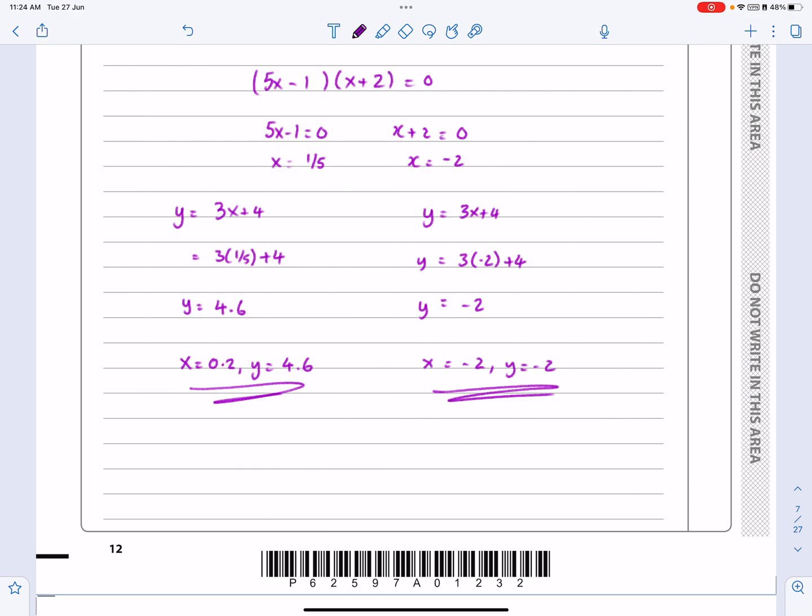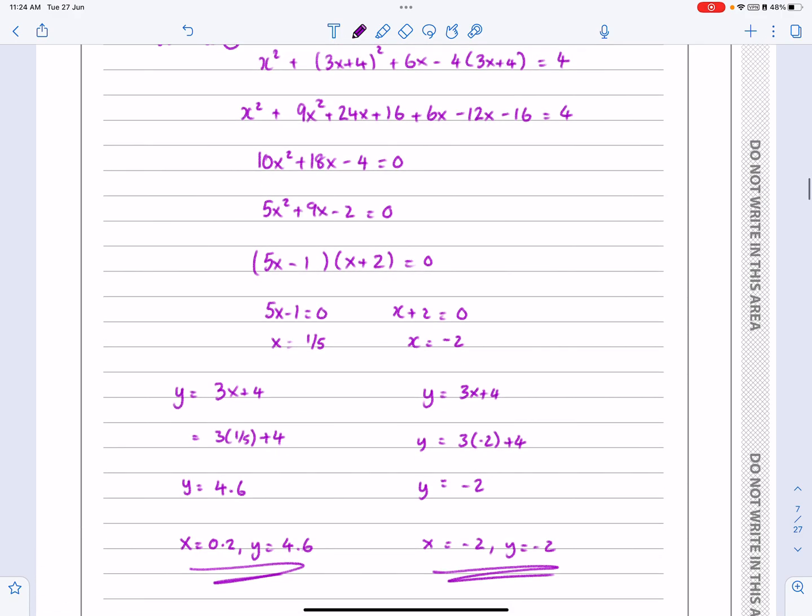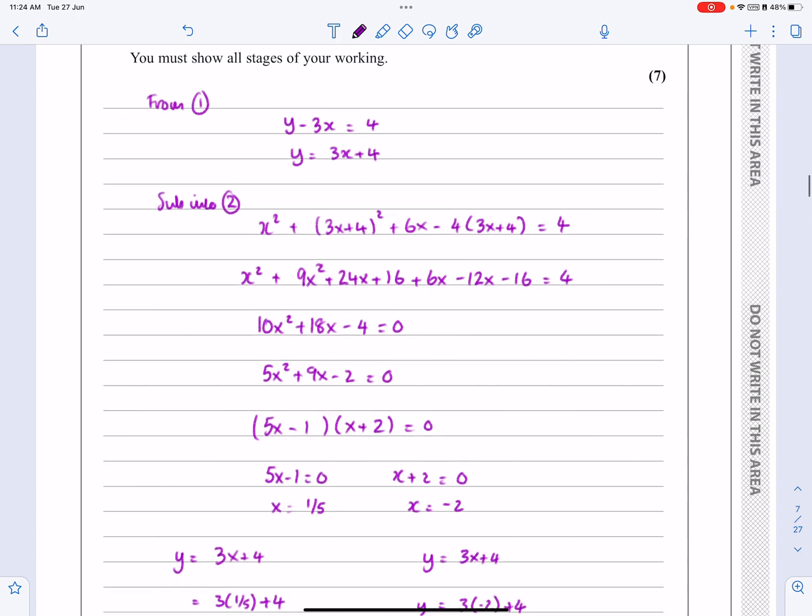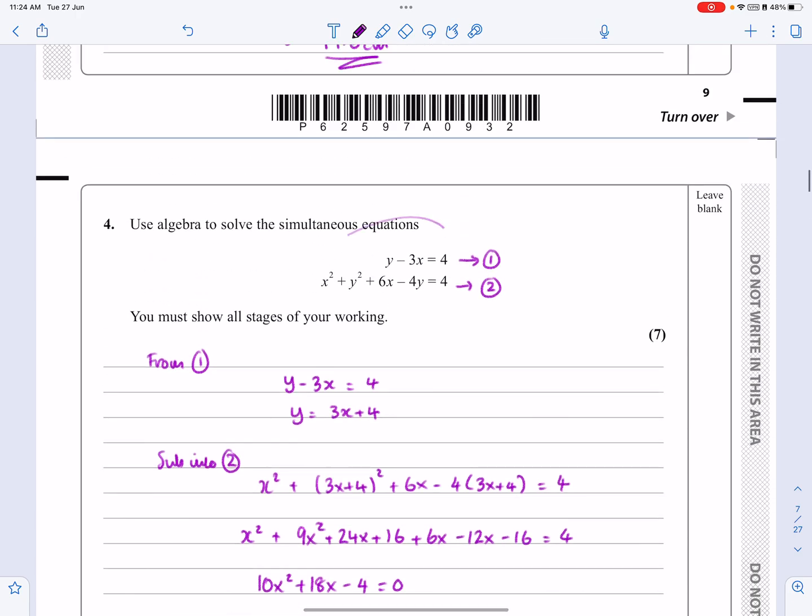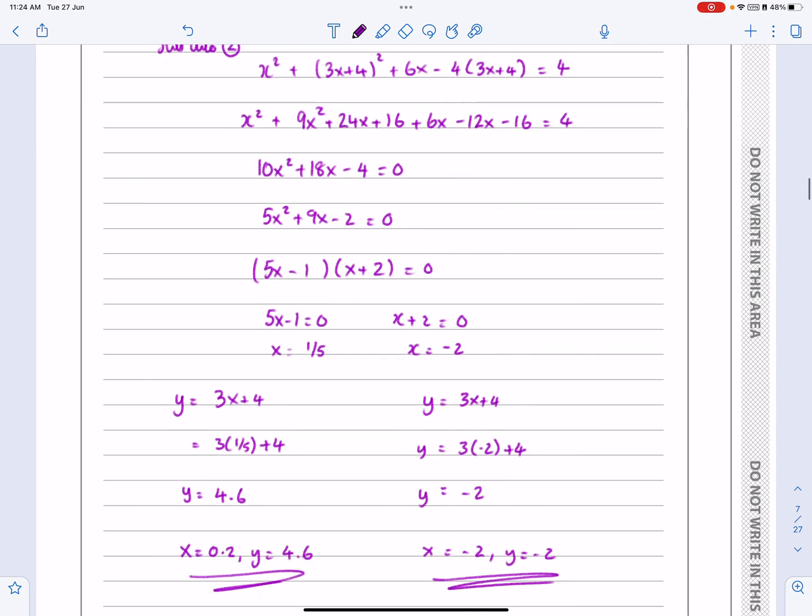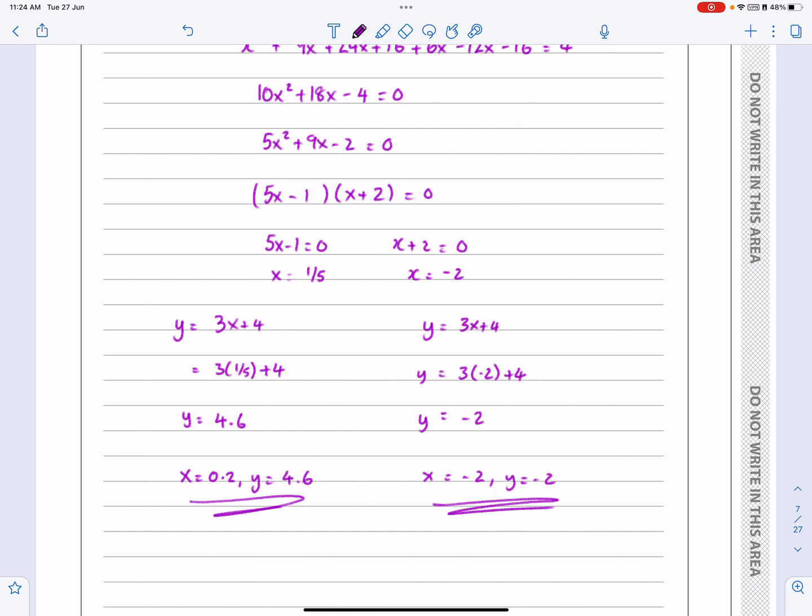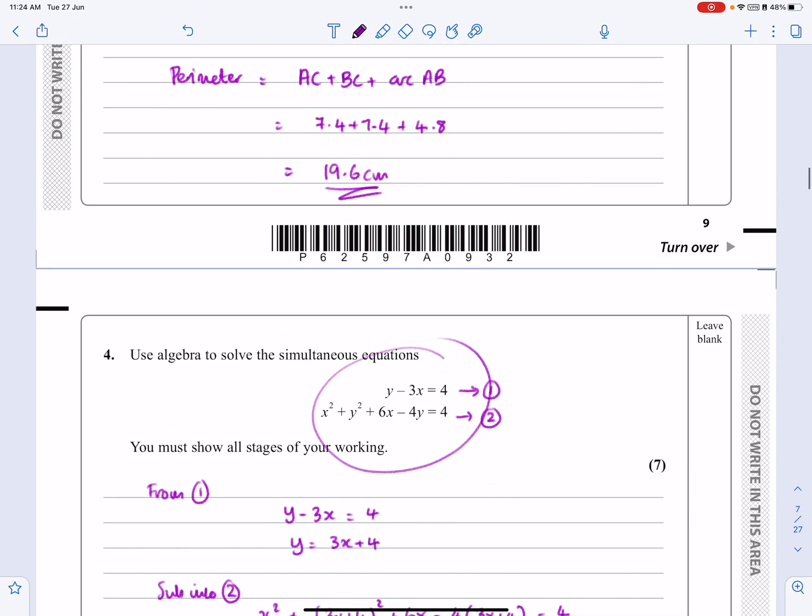Now, if you had time at the end - at the very, very end of the paper, I wouldn't do it now - but you could go back and substitute those answers back in to check. If you've got x = 0.2 and y = 4.6, does it work? If you've got x = -2 and y = -2, does it work?